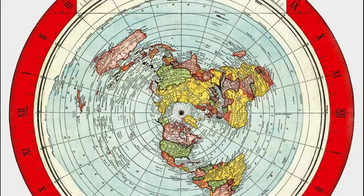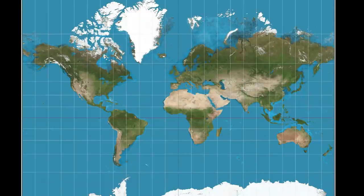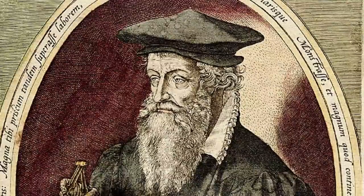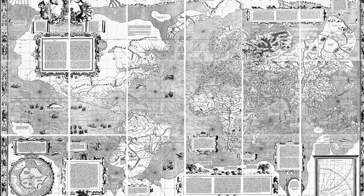Gerardus Mercator was a Flemish geographer and cartographer, responsible for the Mercator projection for navigation, in which North is up and South is down. It is pretty much the same map we refer to today as the standard map of Earth. A year after his death in 1595, Mercator's family compiled his life's work into an atlas which contained his earlier works. Here is one of his atlases produced in 1569.